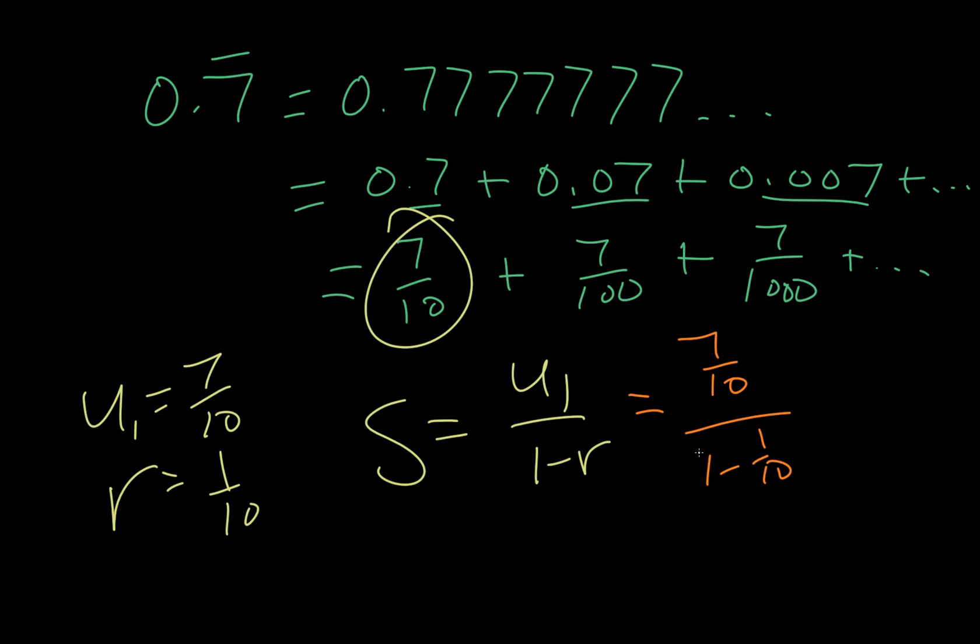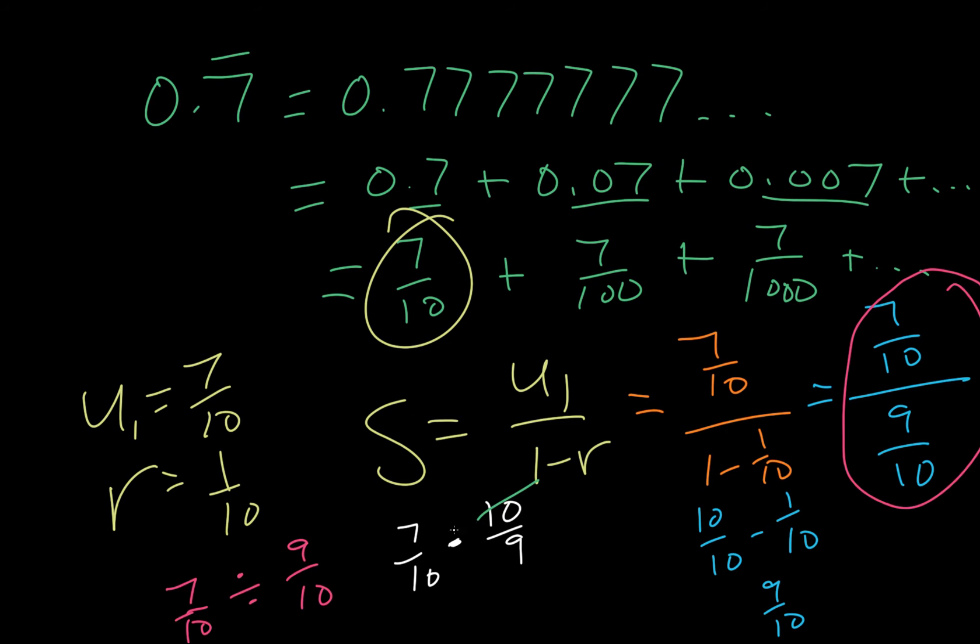We do a little bit of simplification. We think of 1 as 10 over 10. So that gives us 9 tenths. So we have 7 tenths over 9 tenths. That looks kind of confusing. But what I'm going to do is I'm going to take all of this and I'm going to write it as 7 tenths divided by 9 tenths. And we copy, flip. So we write 7 tenths times 10 over 9. Just flip the second one, turn it into multiplication. And then from here, use whatever simplification techniques you can. I like to cancel these two 10s. And then we're left with 7 ninths.